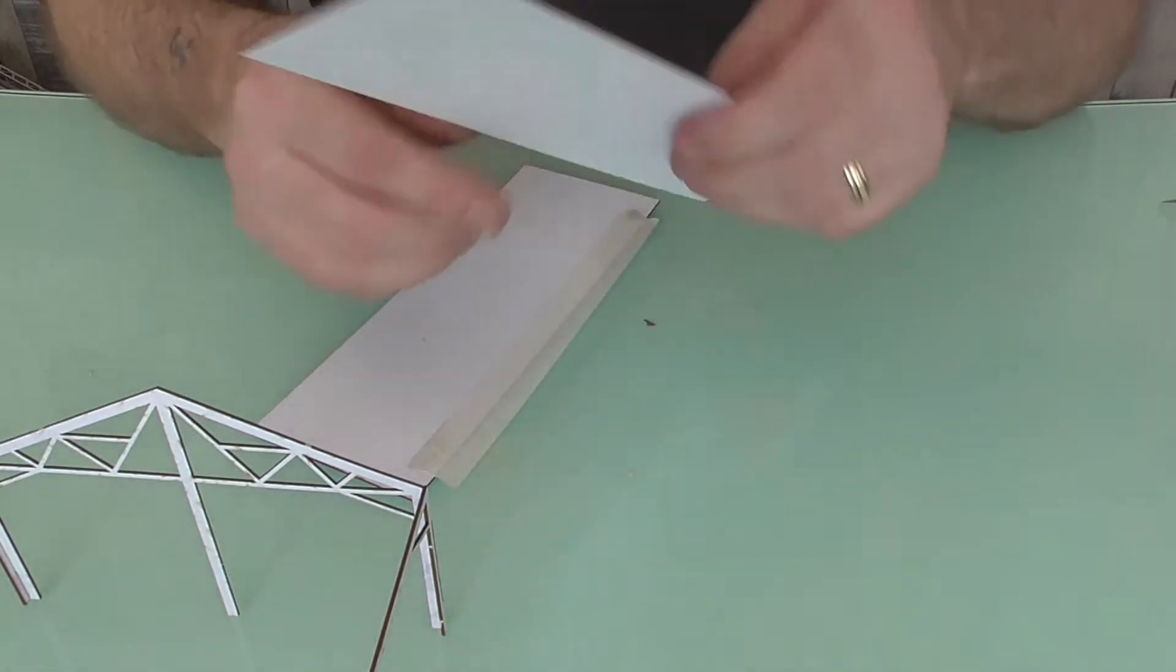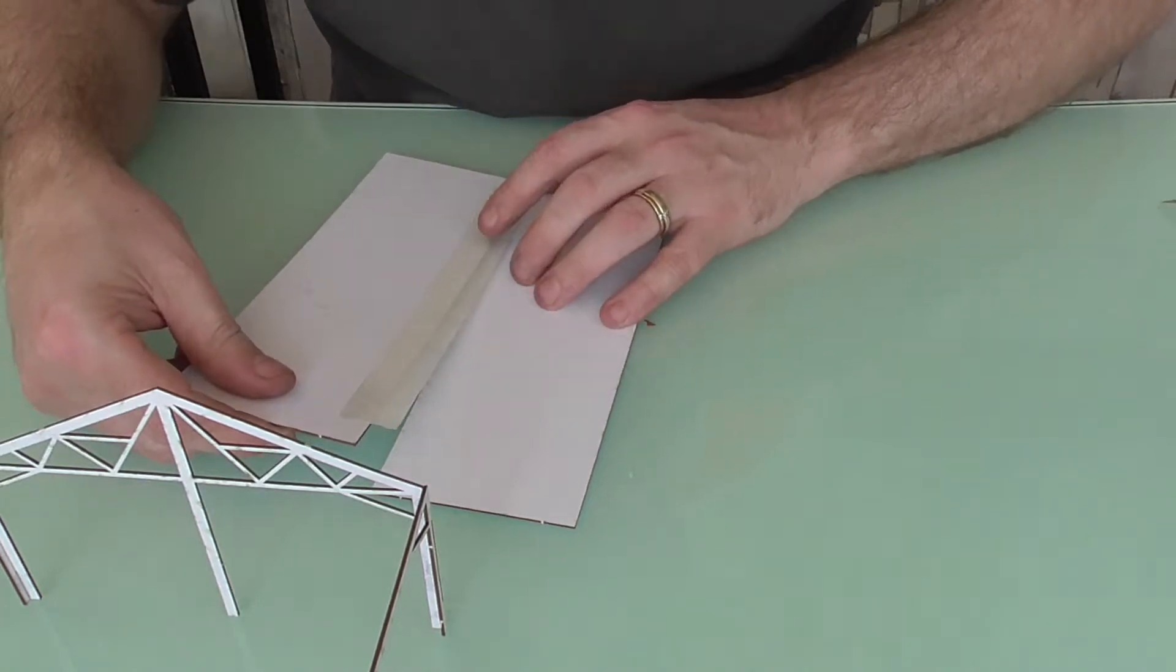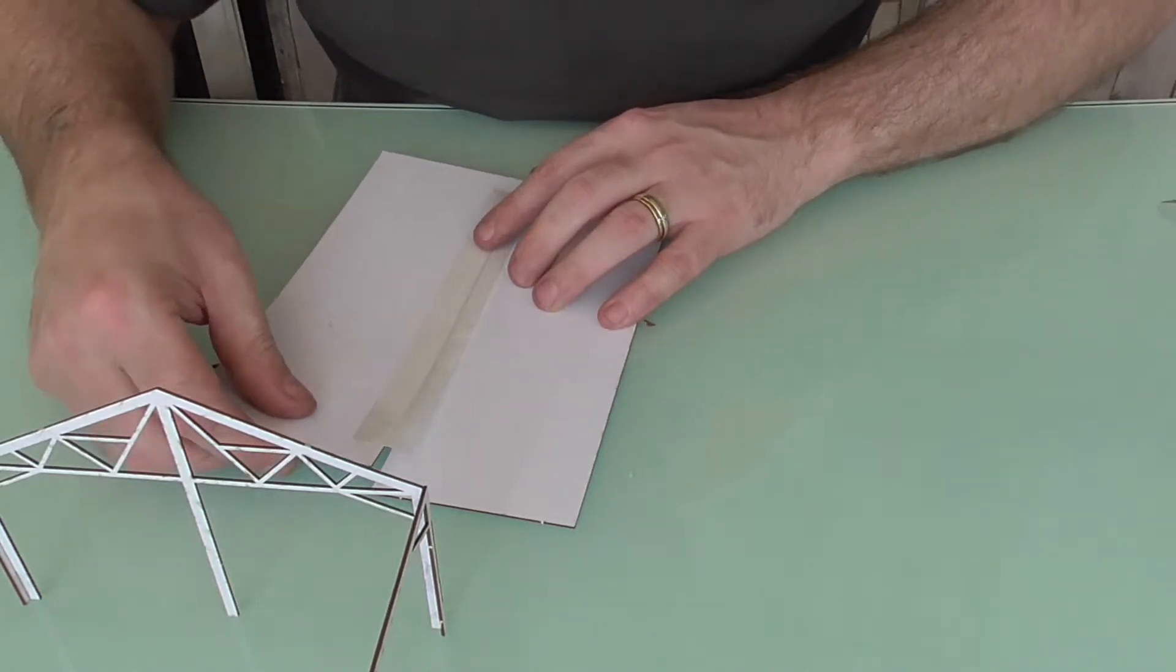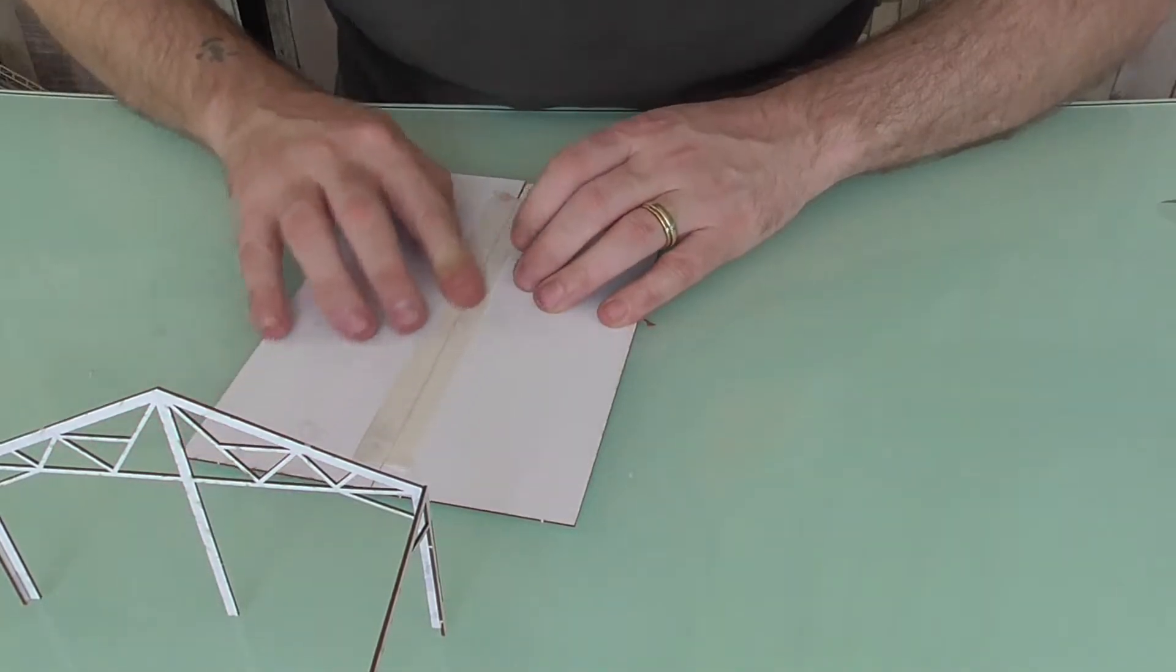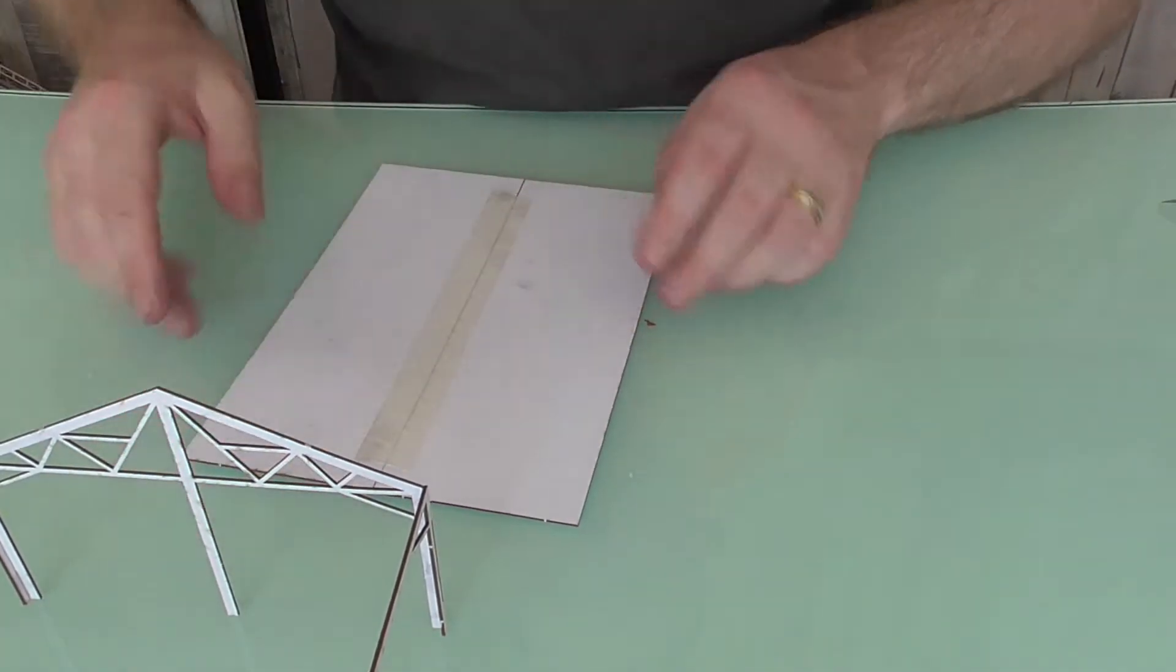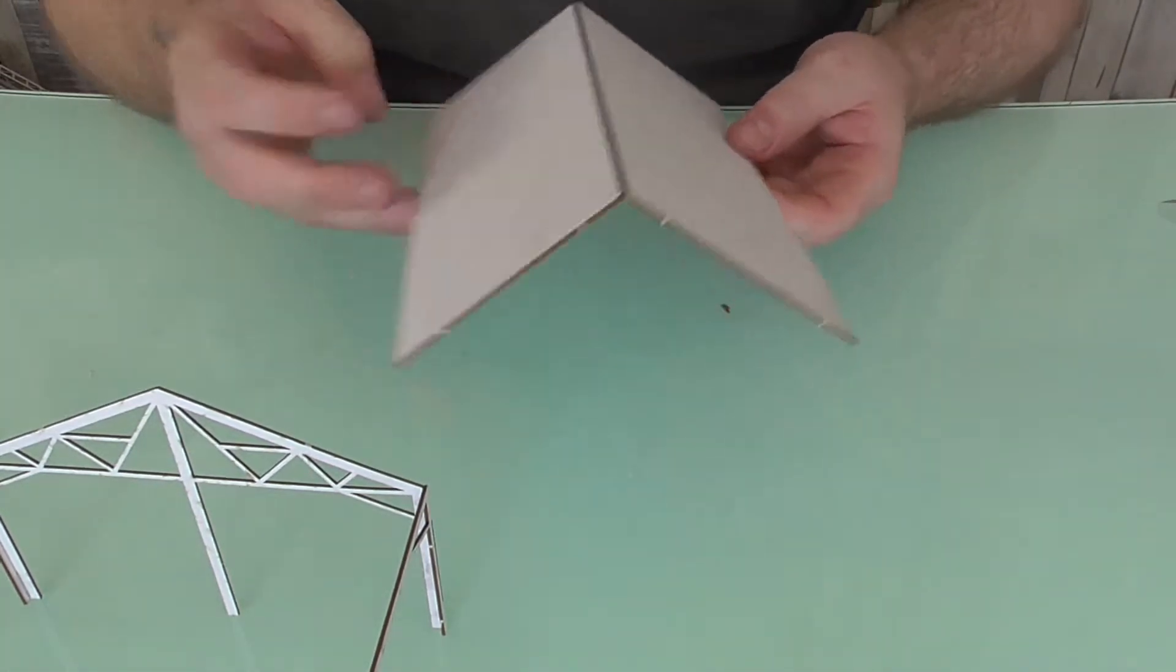I'm just going to run some masking tape down that inside edge. Same again, it's got the etching on that side. I'm going to flip it over. I'm just going to put them together. Make sure they're nice and even level on both sides. Like so. So now that will naturally hold the apex for us.